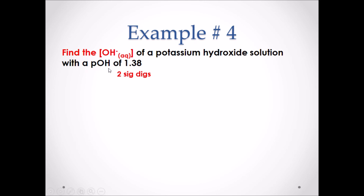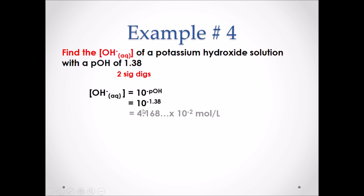Note that a pOH value of 1.38 only has two significant digits — the 3 and 8 after the decimal place. The concentration of OH⁻ equals 10 to the exponent negative pOH. Solving this gives 4.168... × 10⁻² moles per liter. Rounding to two significant digits, our answer is 4.2 × 10⁻² moles per liter.